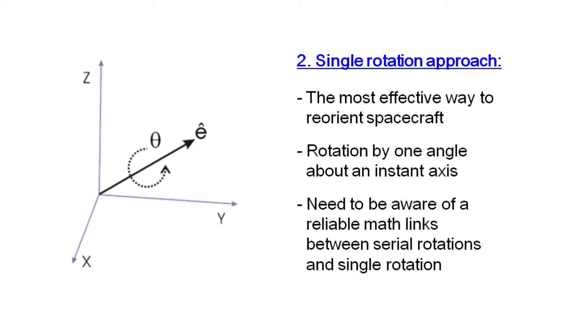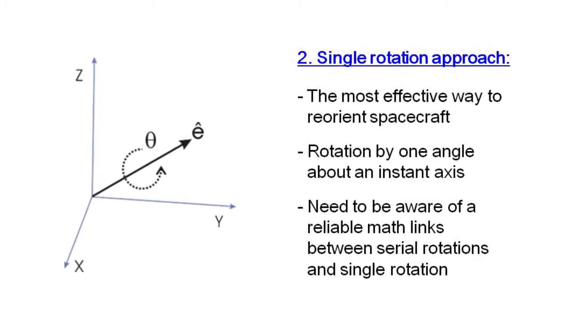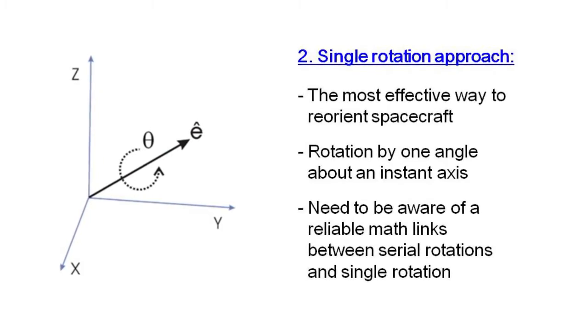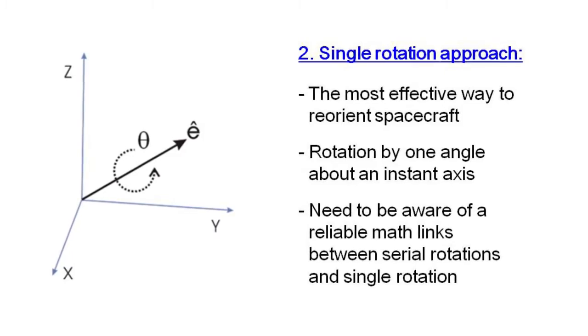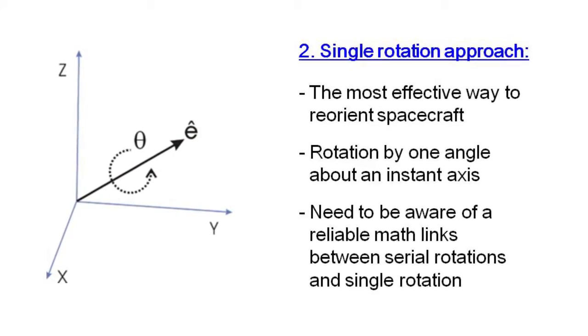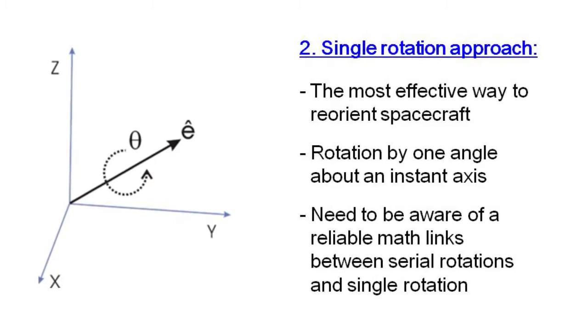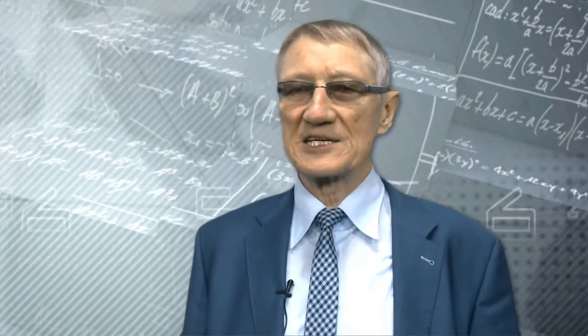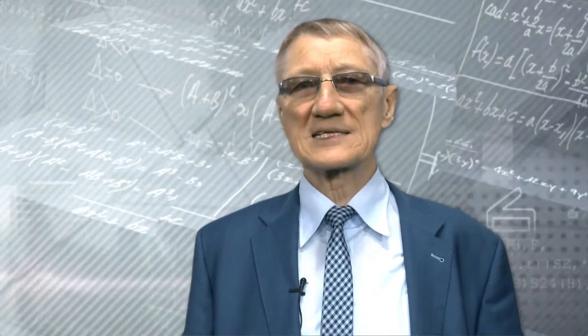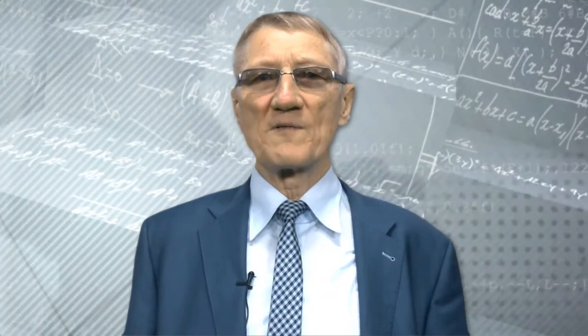And this is the paradigm of the second type of spacecraft reorientation. But effective use of this approach requires a reliable mathematical link between three angles assigned for reorientation and one angle of the single rotation. This problem directly and in detail is solved in the second part of this paper with use of algebra of quaternion numbers.